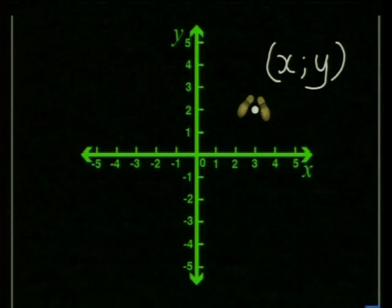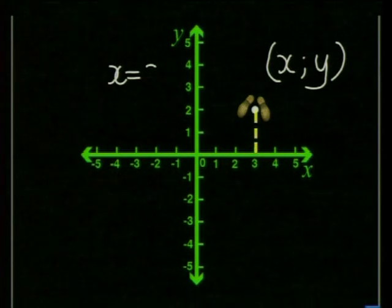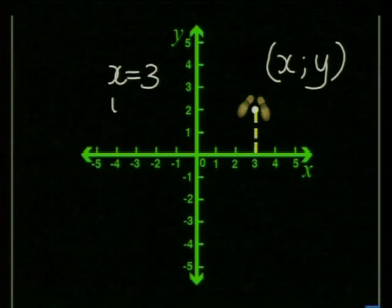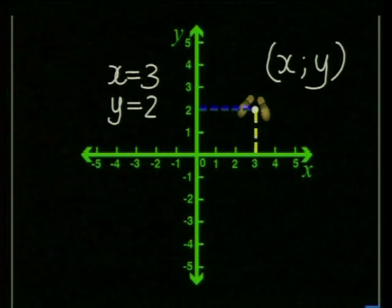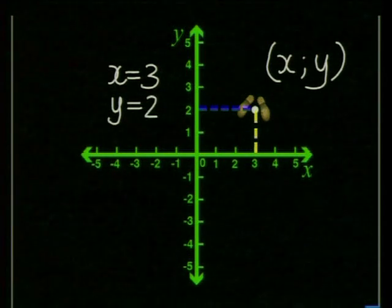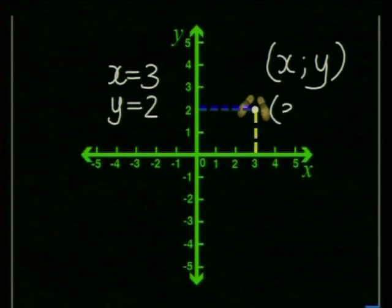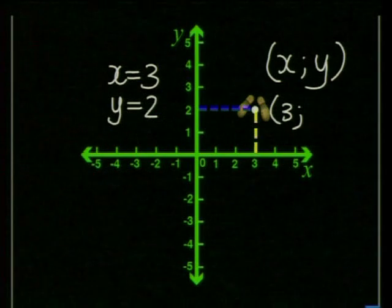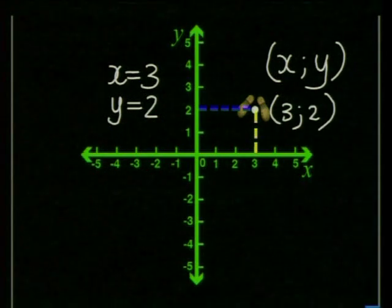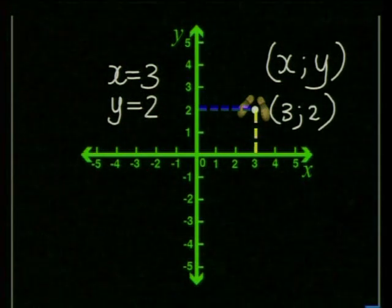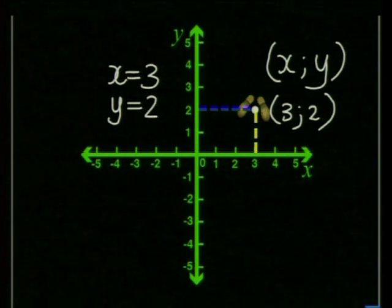So your x-coordinate is 3 and your y-coordinate is 2. And then you write in your coordinates. So the x is 3 and the y is 2. You must remember to separate the x and y-coordinates by a semicolon.